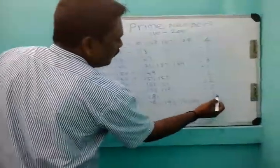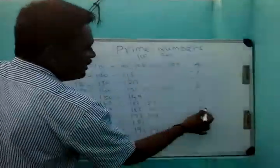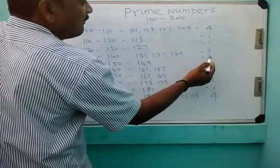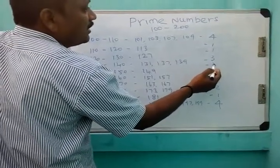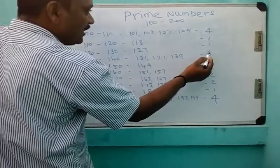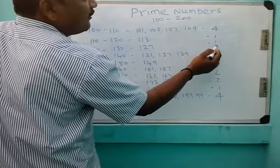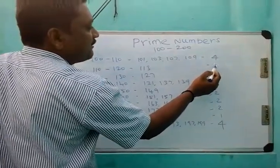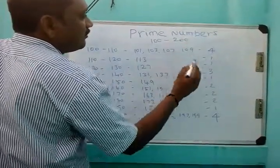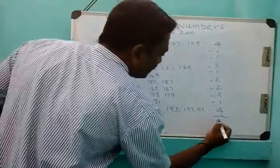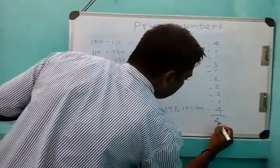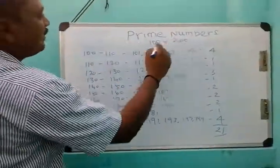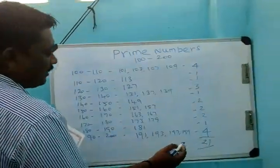4, plus 1 is 5, plus 2 is 7, plus 2 is 9, plus 2 is 11, plus 1 is 12, plus 3 is 15, plus 1 is 16, then 17, plus 4 is 21 total prime numbers between 100 and 200.